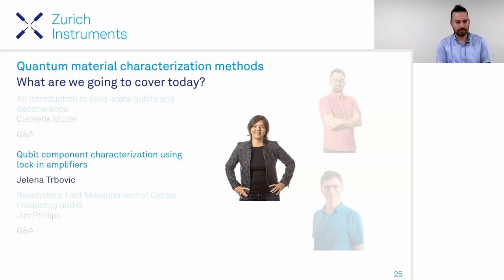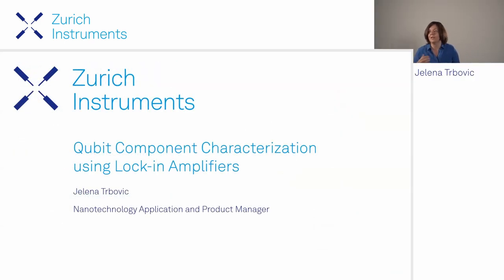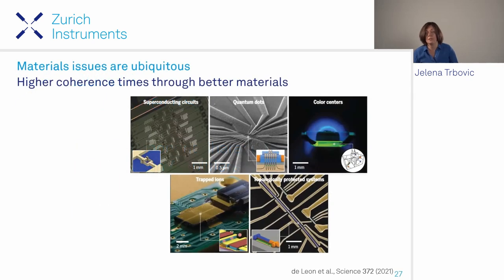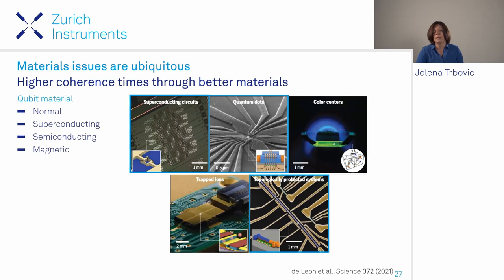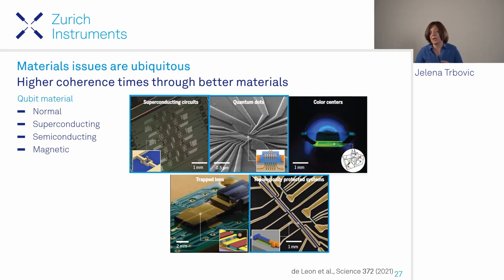Thanks, Ed and Clemens, for helping us understand why studying material properties is important to improve qubit coherence times. We want to look at three types of qubit structures: superconducting circuits, quantum dots where spin qubits are made, and topological systems—all with materials that we can individually characterize and better understand.